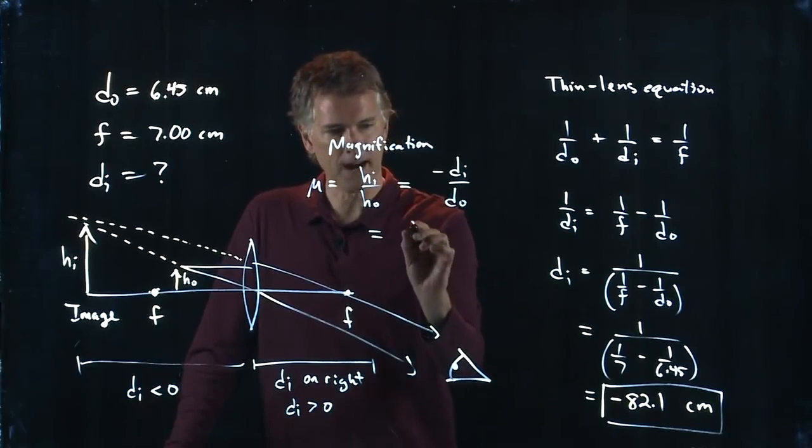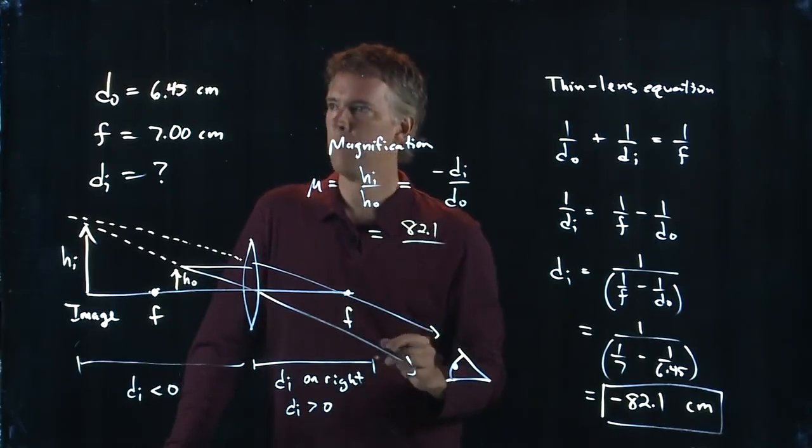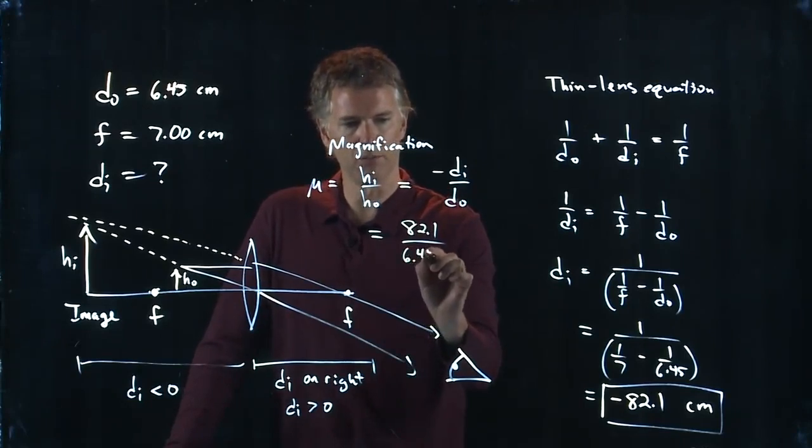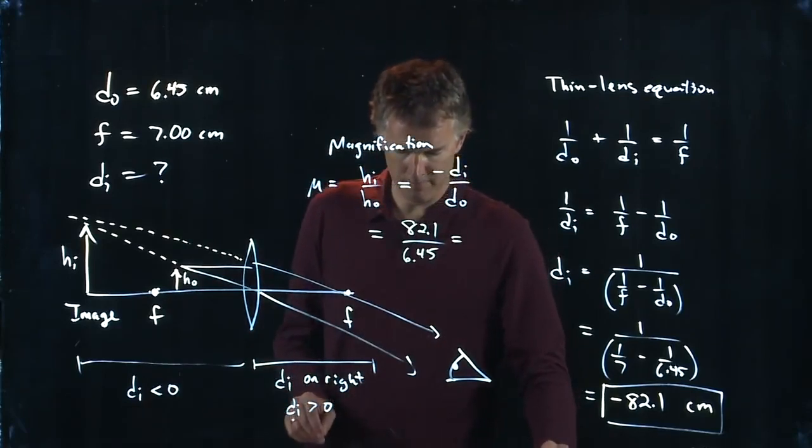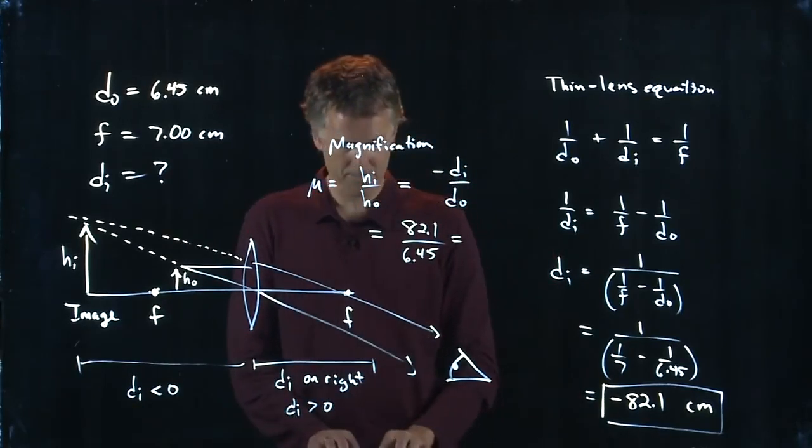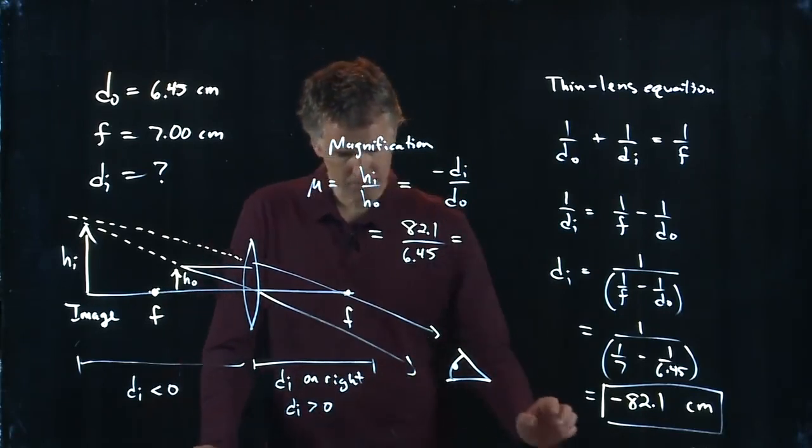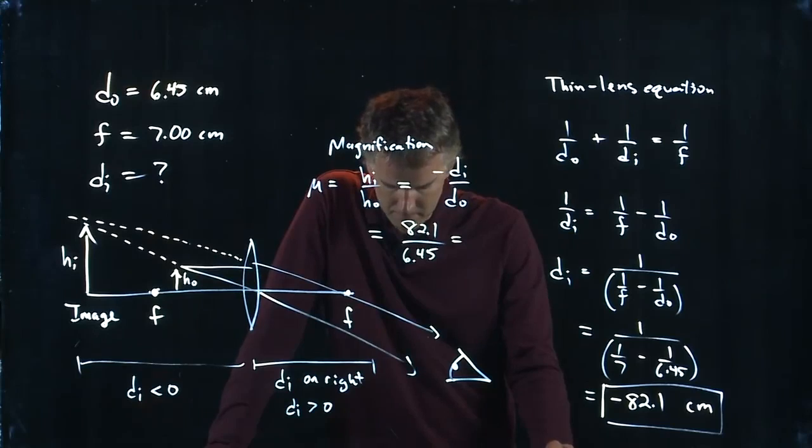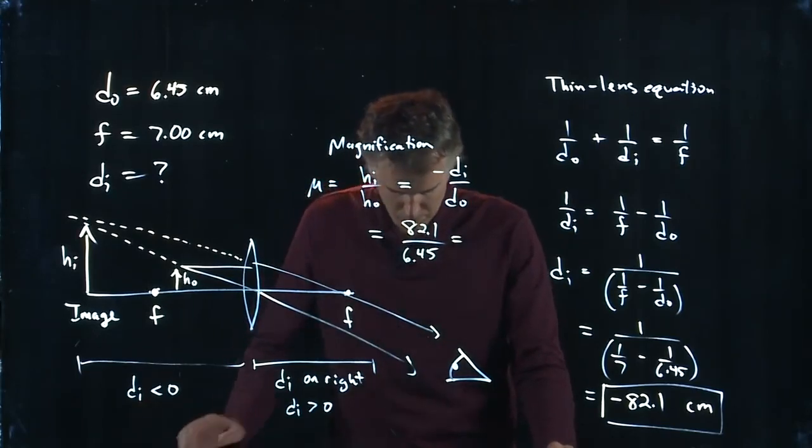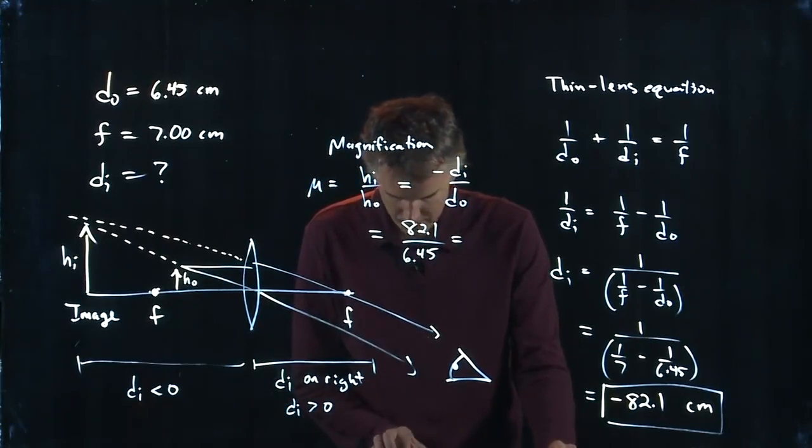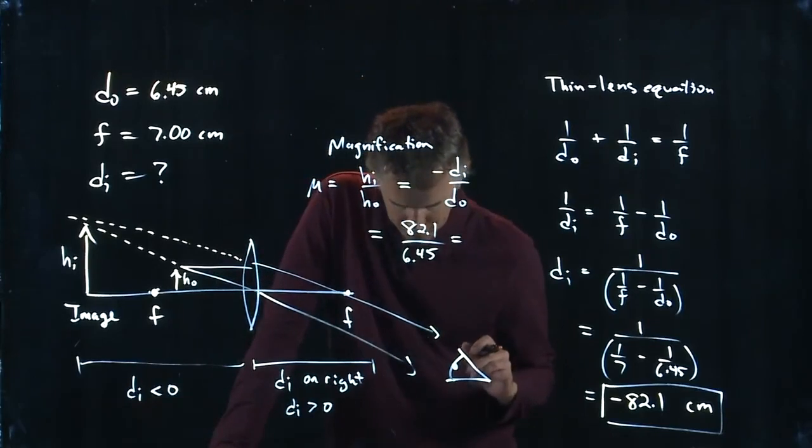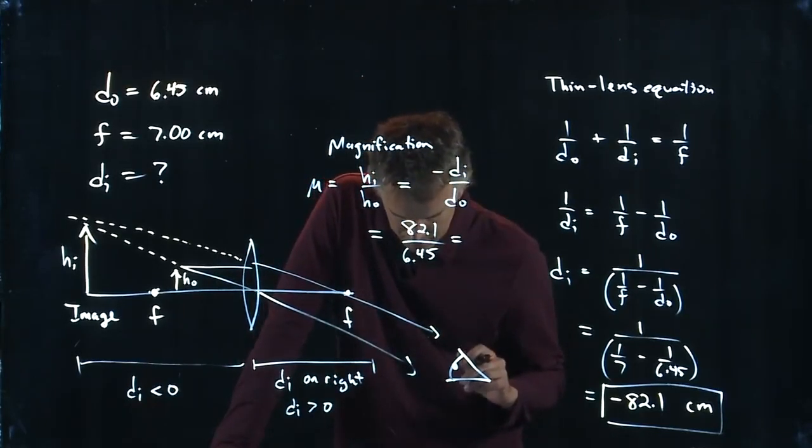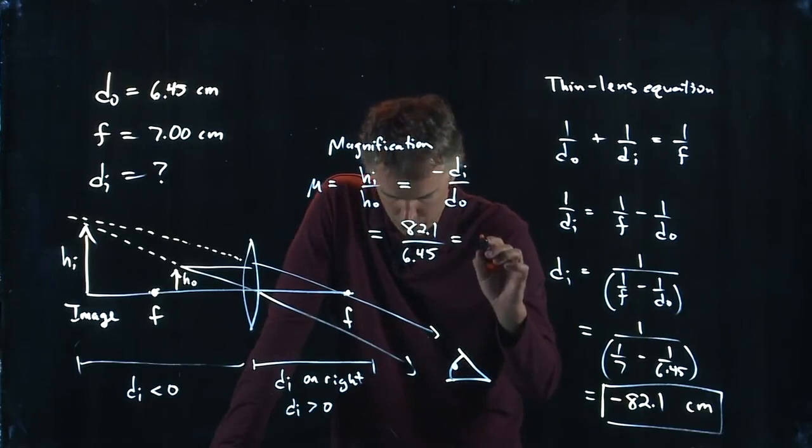Negative DI means positive 82.1 centimeters. DO, they told us 6.45. So if I divide 82.1 by 6.45, let's see what we get. Let's add one more parentheses here so we know we're doing it right.